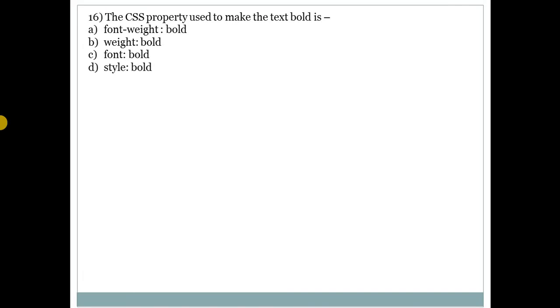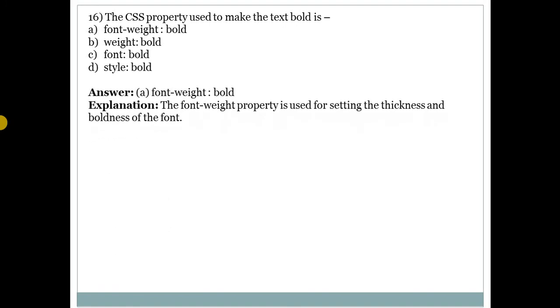Question number 16: the CSS property used to make text bold? Answer is A — font-weight with value bold. The font-weight property is used for setting the thickness and boldness of the font.